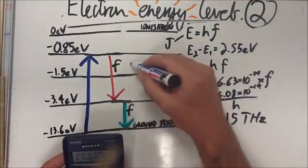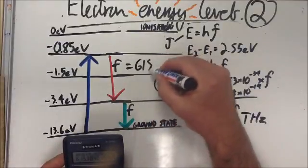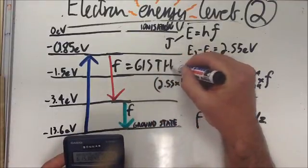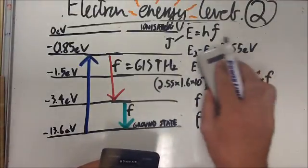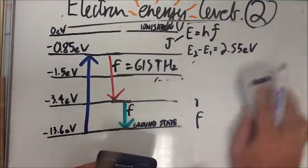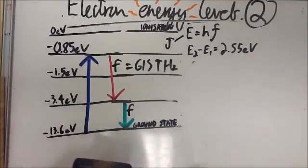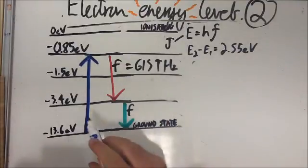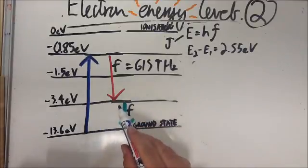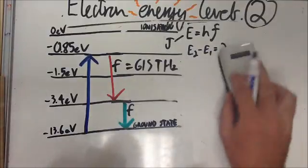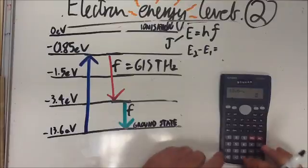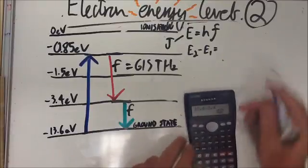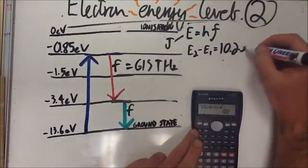Okay? So at this level here, the frequency is equal to 615 Terahertz, or Tera standing for times 10 to the 12. We do exactly the same thing to work out this energy level here, this frequency here. So the difference here, as it drops from 3.4 down to 13.4, sorry 13.6, take away 3.4, so we've lost 10.2 electron volts, exactly the same process.